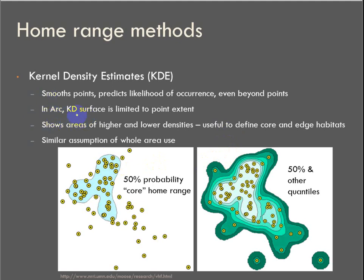The way that Arc runs kernel density, the surface is limited to the point extents. It will create a raster, but it cuts it off at the minimum and maximum extents of the data. It'll be cropped here. That's one of the limitations of running it in Arc, but that's okay. It's going to show areas of higher and lower densities of points, useful for defining core and edge or general habitats, which is what we're going to do.